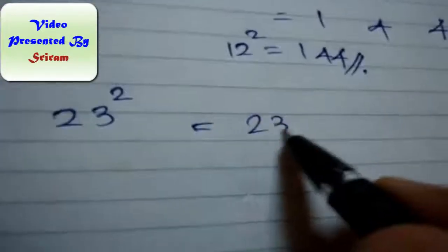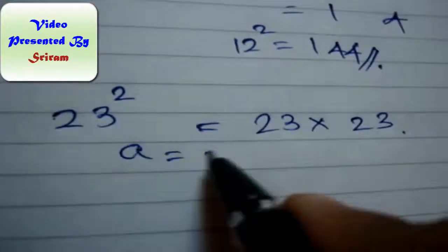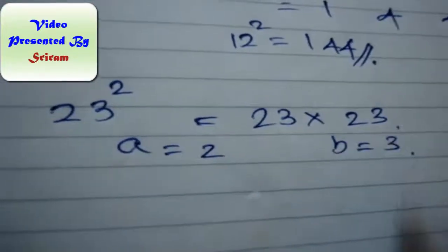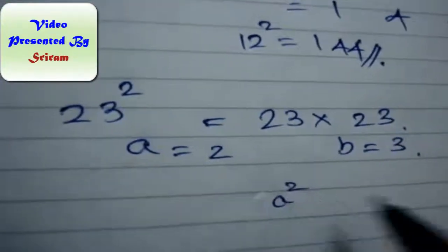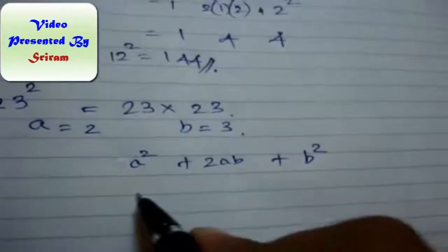Let us take an example of 23 squared. This is 23 times 23. So here a is equal to 2 and b is equal to 3. So a² + 2ab + b².